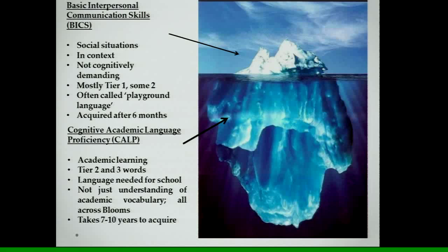The iceberg graphic is popular among ESOL folks because BICs are what sticks up above the water — it's the playground language. Most kids get that in six months, a few take a little longer. CALP, however, is the deep language that allows you to listen to a lecture and understand it, write an essay, and explain your reasoning. That takes seven to ten years to learn.